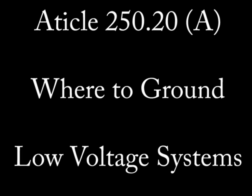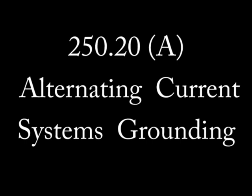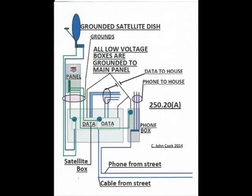Hi, this is John and we continue on Grounding Codes with the article 250.20, System Grounding. There are four parts to this article, A through D. We are only going to cover part A. Part A is the code that requires low voltage systems to be grounded. The other three sections are for higher alternating current voltages.